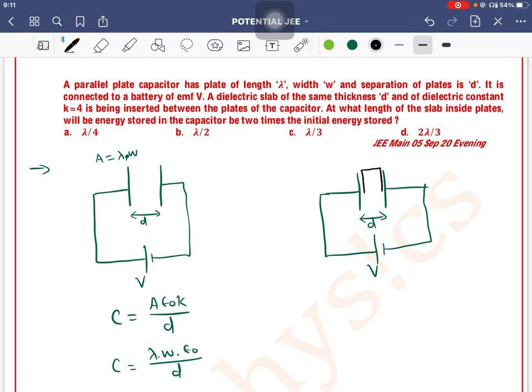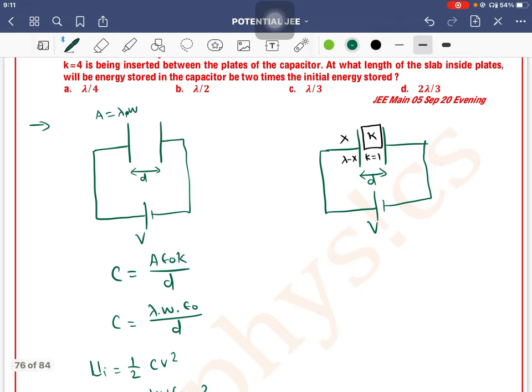When the dielectric is inserted a length x, the remaining gap has dielectric constant one. So the length that remains is lambda minus x. So you basically have two capacitors: capacitance C1 and capacitance C2.